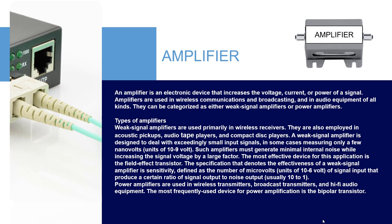Types of Amplifiers. Weak signal amplifiers are used primarily in wireless receivers, and are also employed in acoustic pickups, audio tape players, and compact disc players. A weak signal amplifier is designed to deal with exceedingly small input signals — in some cases measuring only a few nanovolts (units of 10⁻⁹ volt). Such amplifiers must generate minimal internal noise while increasing the signal voltage by a large factor. The most effective device for this application is the field-effect transistor. The key specification is sensitivity, defined as the number of microvolts (units of 10⁻⁶ volt) of input that produce a signal-to-noise output ratio, usually 10:1.